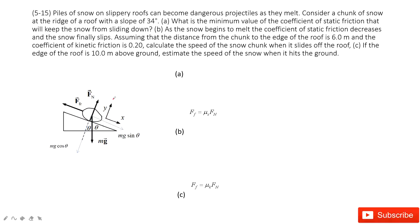In this problem, we can see there is a slope with an object that keeps stationary on it. We need to figure out the coefficient of static friction. Then the slope surface changes — the snow begins to melt — and the coefficient decreases to μk, the kinetic friction. We then need to find the velocity when the snow reaches the boundary.